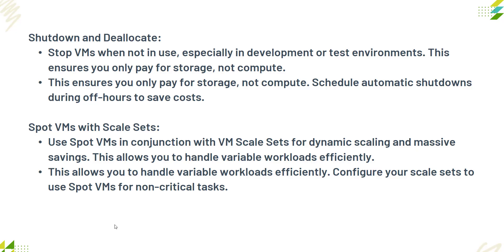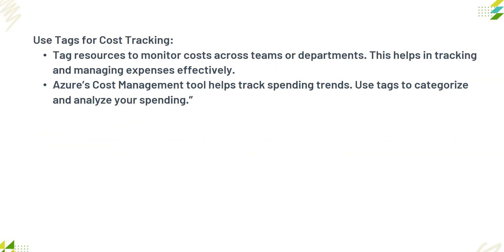Use tags for cost tracking — tag resources to monitor costs across teams and departments. This helps in tracking and managing expenses effectively. For example, you can assign tags for departments like Sales, R&D, IT, Shipping, and Finance, then track their individual costs. Azure Cost Management helps track spending trends, and tags help categorize and analyze spending.